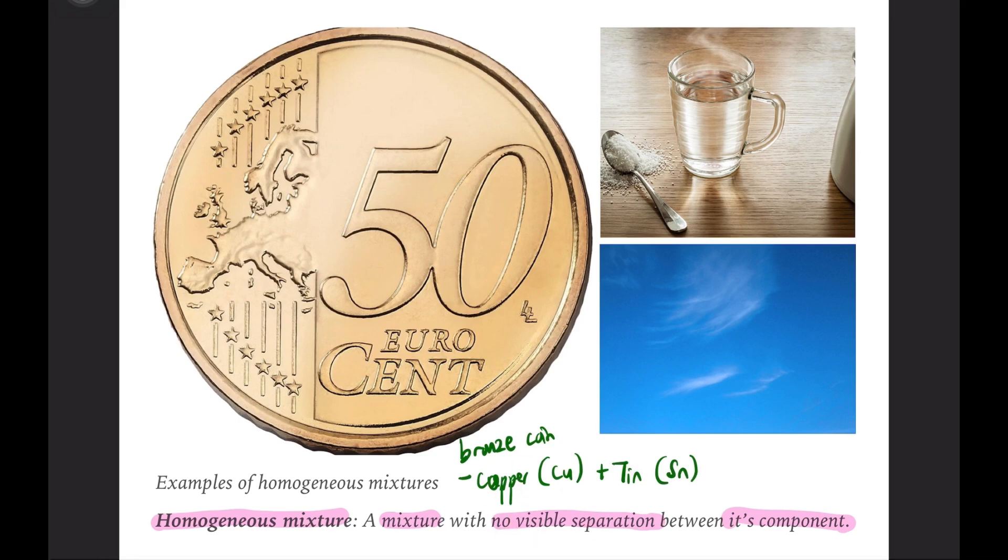The second one we see here has sugar and hot water. If we combine them, can we still see where the sugar is? Of course not. It will dissolve. So we cannot see where the sugar is, where the hot water is. Everything becomes one solution.